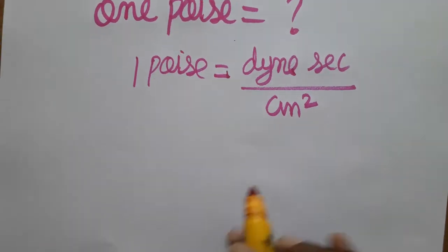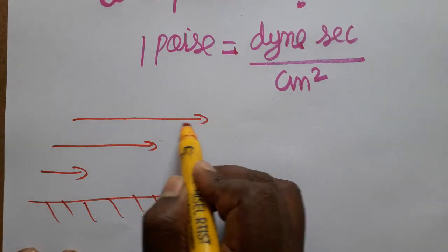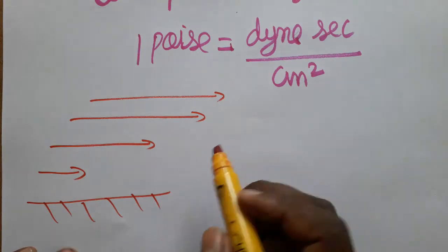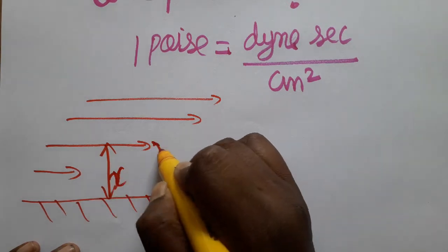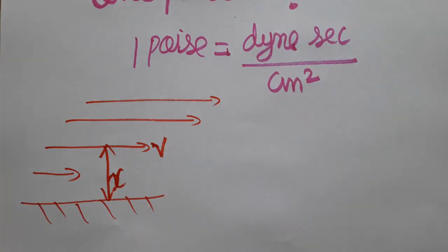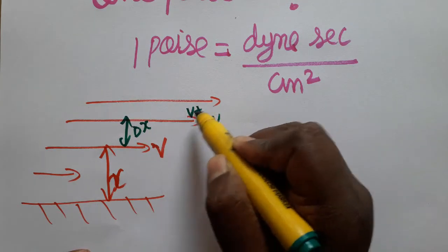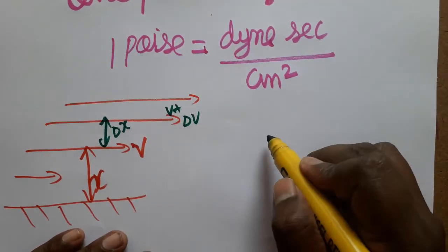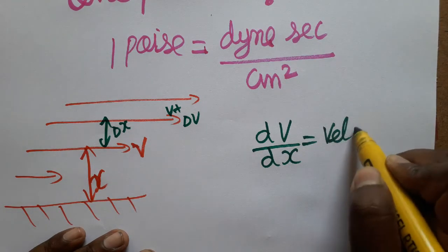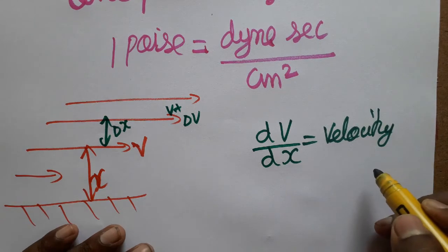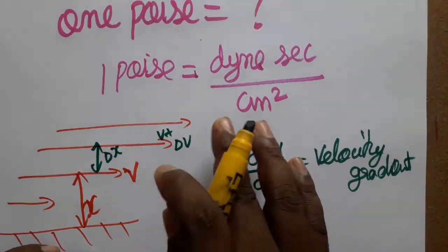First we should know what is the coefficient of viscosity. We have a surface here and a liquid is flowing. As the distance from the surface increases, the velocity also increases. We take x as the distance from the surface, v as the velocity, and del x as a small increase in distance. The velocity increases by del v, giving v plus del v. This is called the velocity gradient — velocity increasing with respect to distance. So the velocity gradient is dv by dx.